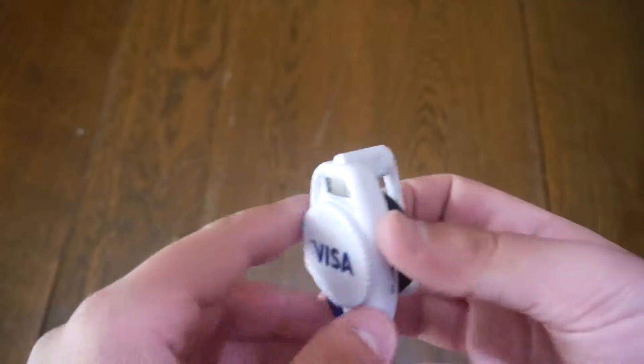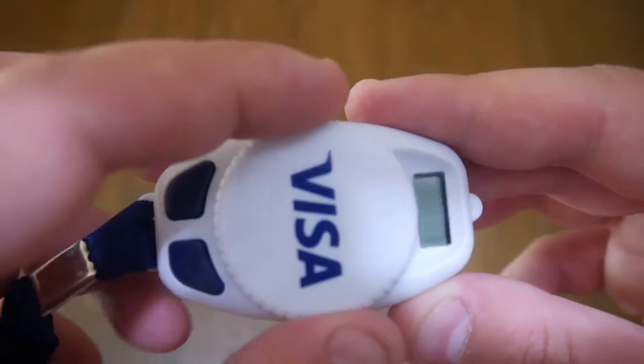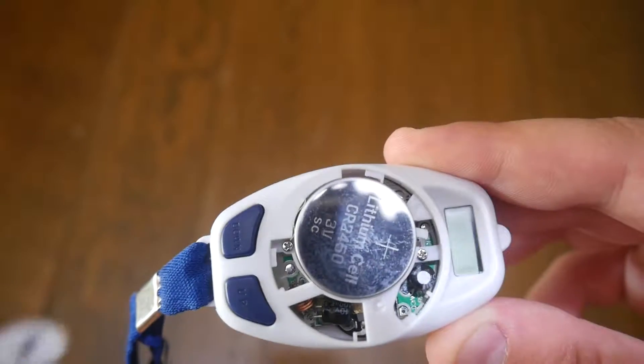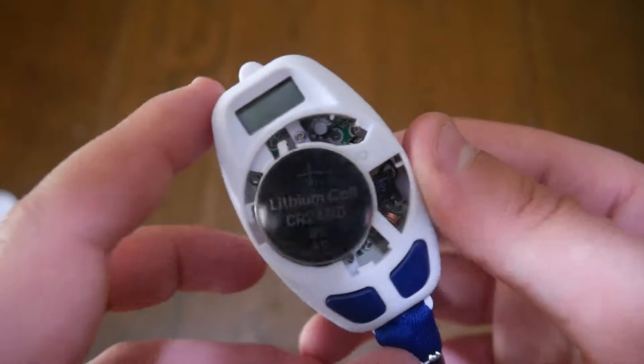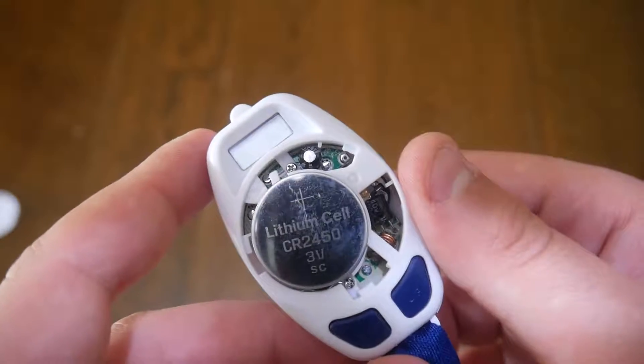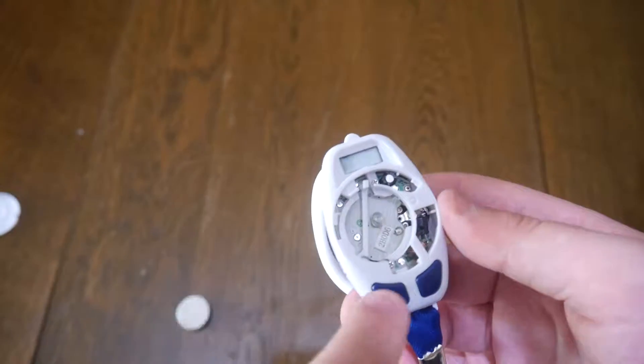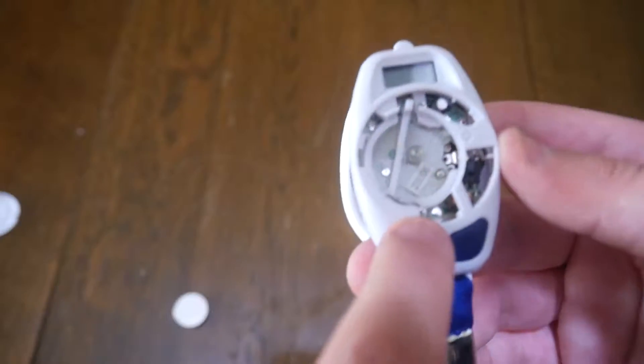First up is this huge piece of Visa branding, but it pops right off. You can see the battery—it's actually a lithium CR2450 battery that also comes right out. You will find two small screws, one there and one there.